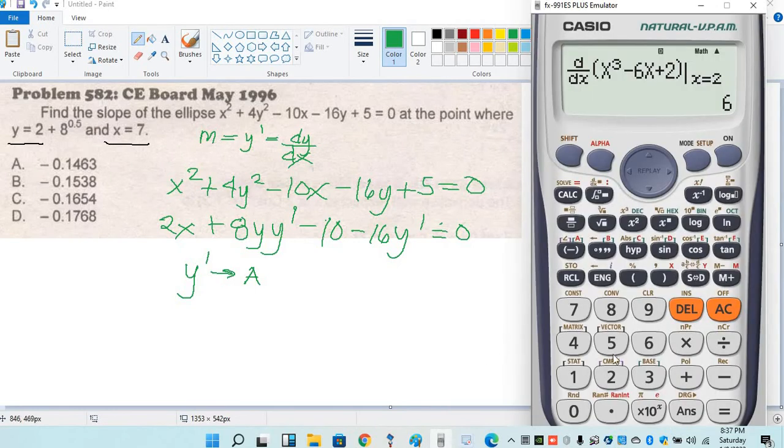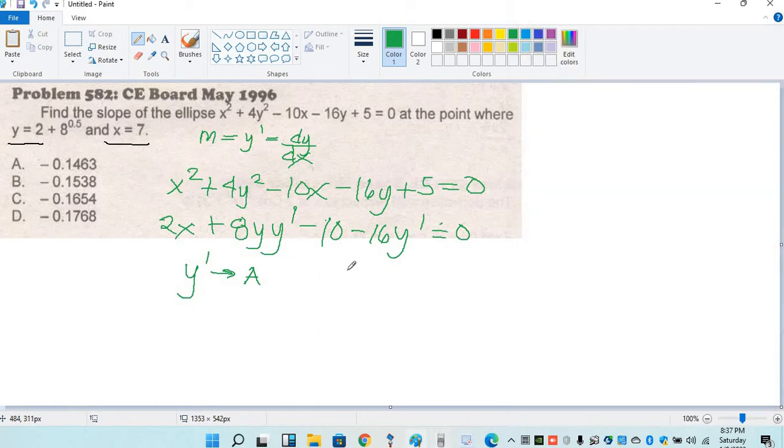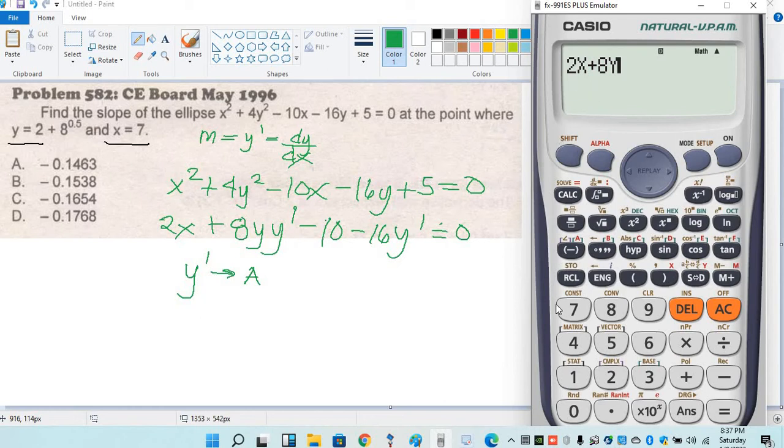So we'll use the calculator to solve this problem. Input equation: 2x plus 8ya minus 10 minus 16a equal to 0.